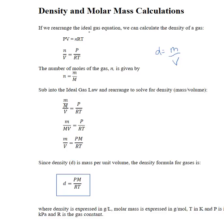Let's start with PV is equal to nRT. What we ultimately want is a relationship where we have mass over volume equal to something. So we're going to start with a rearrangement here. I moved my moles over my volume — I moved my volume over to the right-hand side and my RT over to the left-hand side.